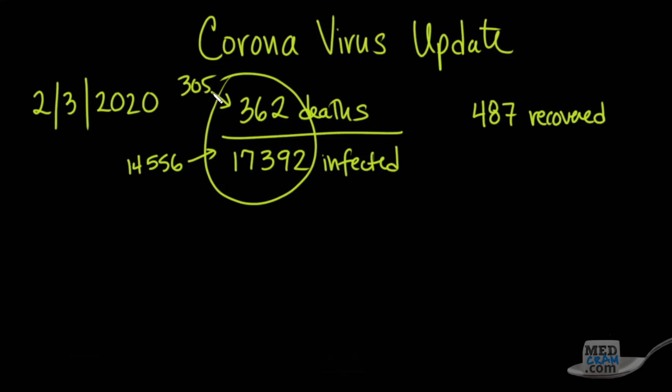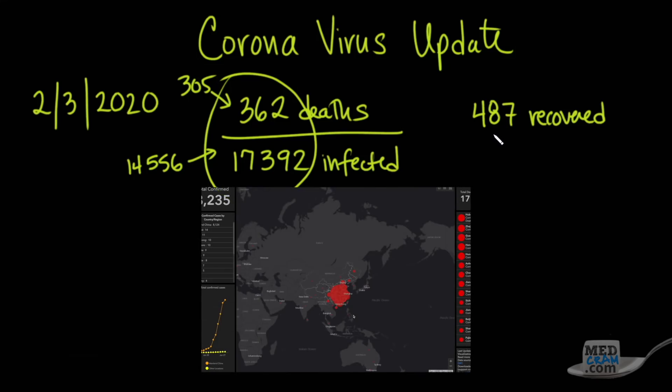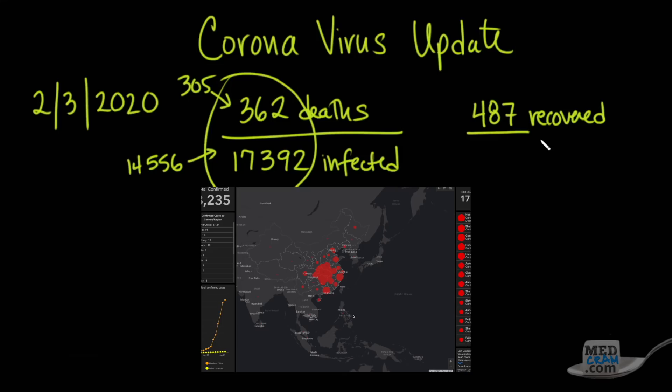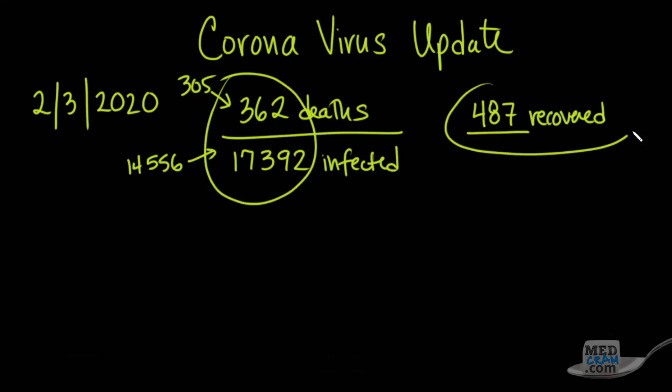The other thing that you might have noticed on the website that we referenced, and we'll make a link to it, which is a nice official reporting dashboard from Johns Hopkins, is this 487 recovered. We'll talk more about that as well. What are the criteria for recovered? And we'll talk a little bit about the Lancet article and also some reporting out of China today.